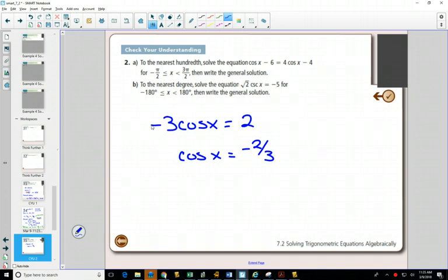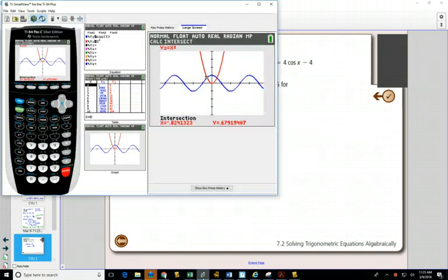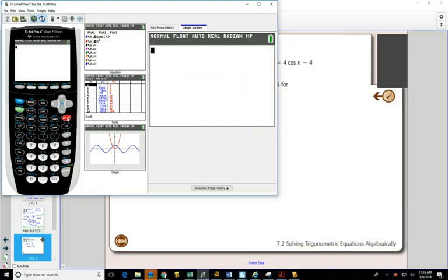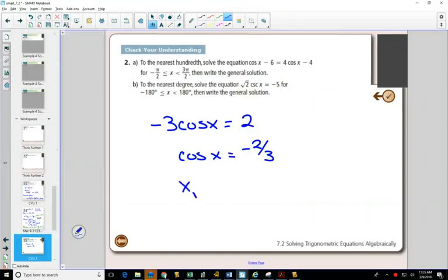Divide both sides by negative 3, and I get cos x equals negative 2 thirds. That value is not on my unit circle, so I need to take out my calculator. The question is in radians, so make sure my calculator is in radians. Do cos inverse of positive 2 thirds to find my reference angle, 0.841. So my reference angle for x is 0.841.